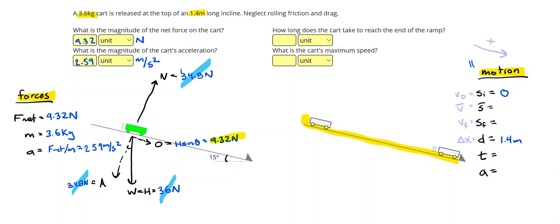Then it says, over here, how long does it take the cart to reach the end of the ramp? And what is the cart's maximum speed? But I've noticed there's going to be one link in all of these forces and motion problems. You're going to see acceleration on both sides. So we're just going to take that 2.59 and move it over to this side.